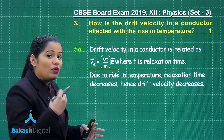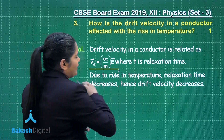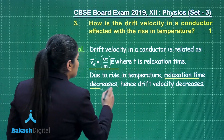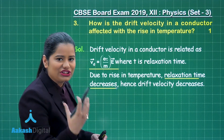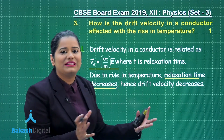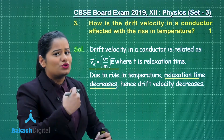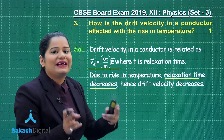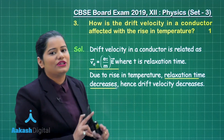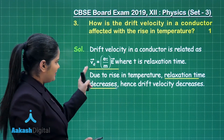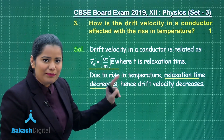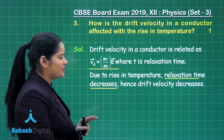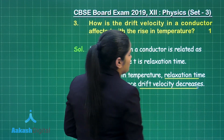Because of the rise in temperature, the relaxation time is going to decrease. The relaxation time is the average time between successive collisions. Due to rise in temperature there are going to be more collisions, and hence τ decreases. Since drift velocity is directly proportional to τ, the drift velocity is going to decrease.